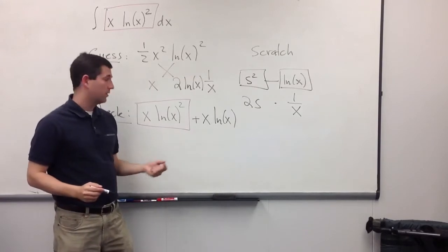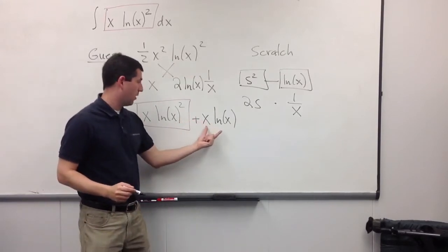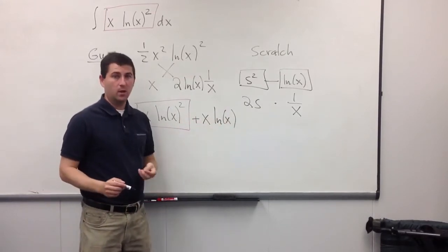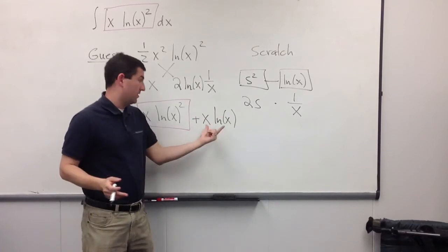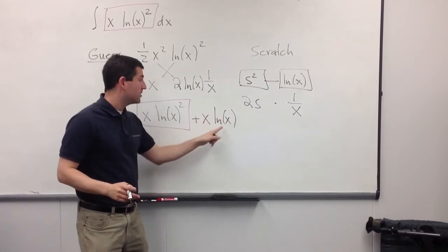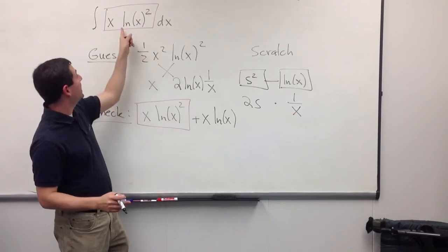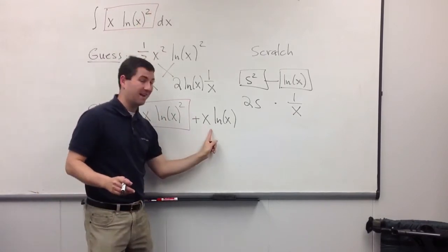So, the good news is, we've reduced the problem to getting rid of this garbage. The bad news is, well, we still have garbage. But, the garbage is better than we had before. Before, it was x ln of x squared. Now, it's just x ln of x.